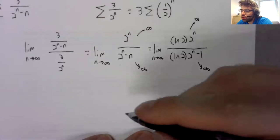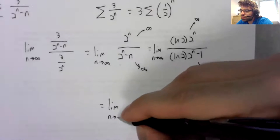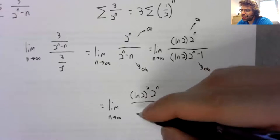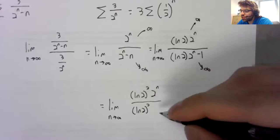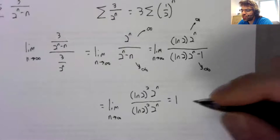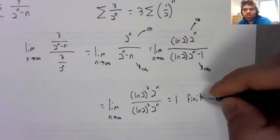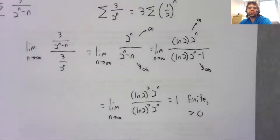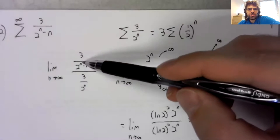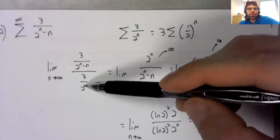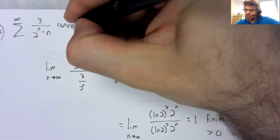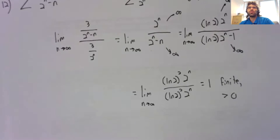And this is still indeterminate. We can take the derivative again. And this time, we no longer have an indeterminate form. Everything cancels. This limit is one. And all we needed was a finite limit that's greater than zero. The limit comparison test says that this series and this series share either convergence or divergence. This series converges. This series converges.